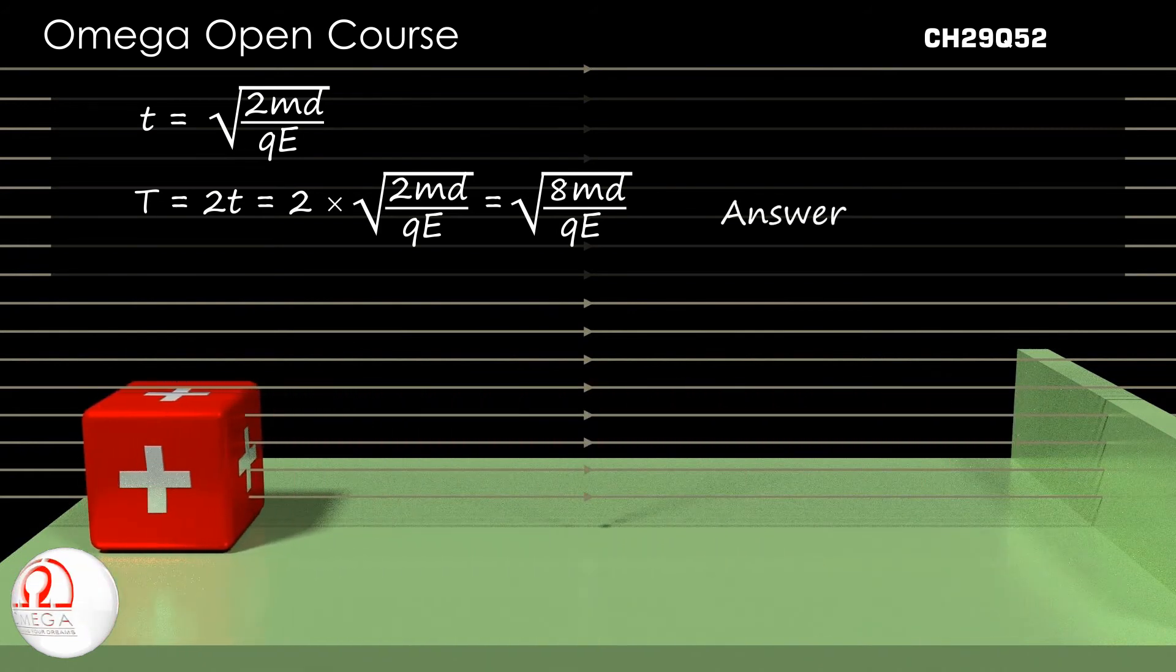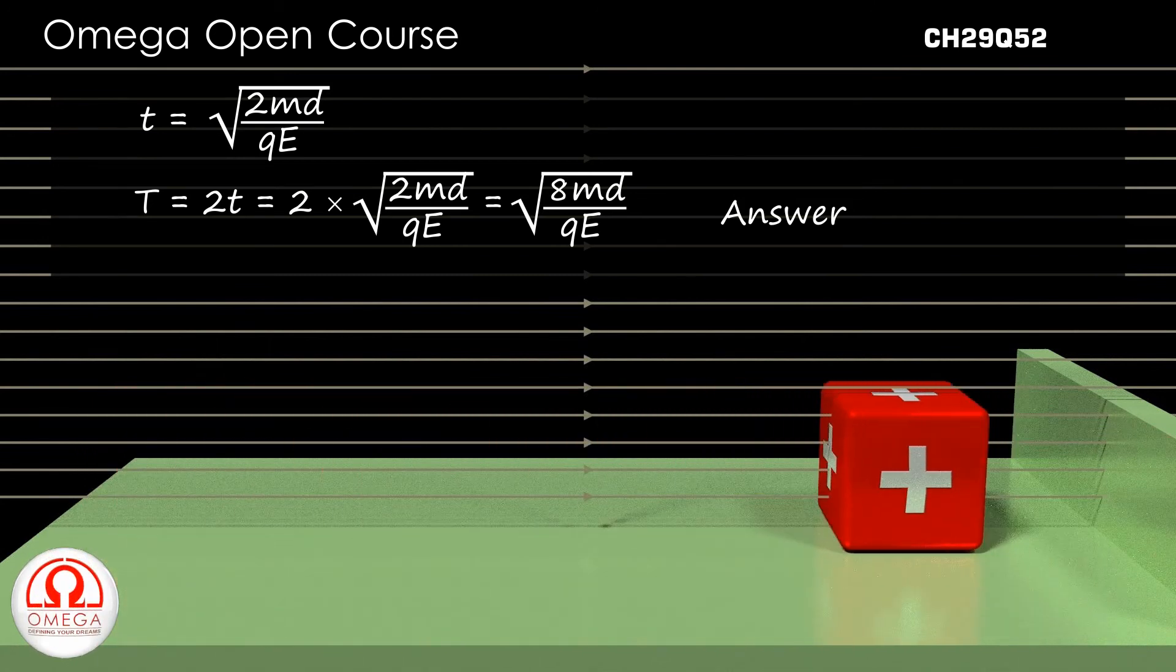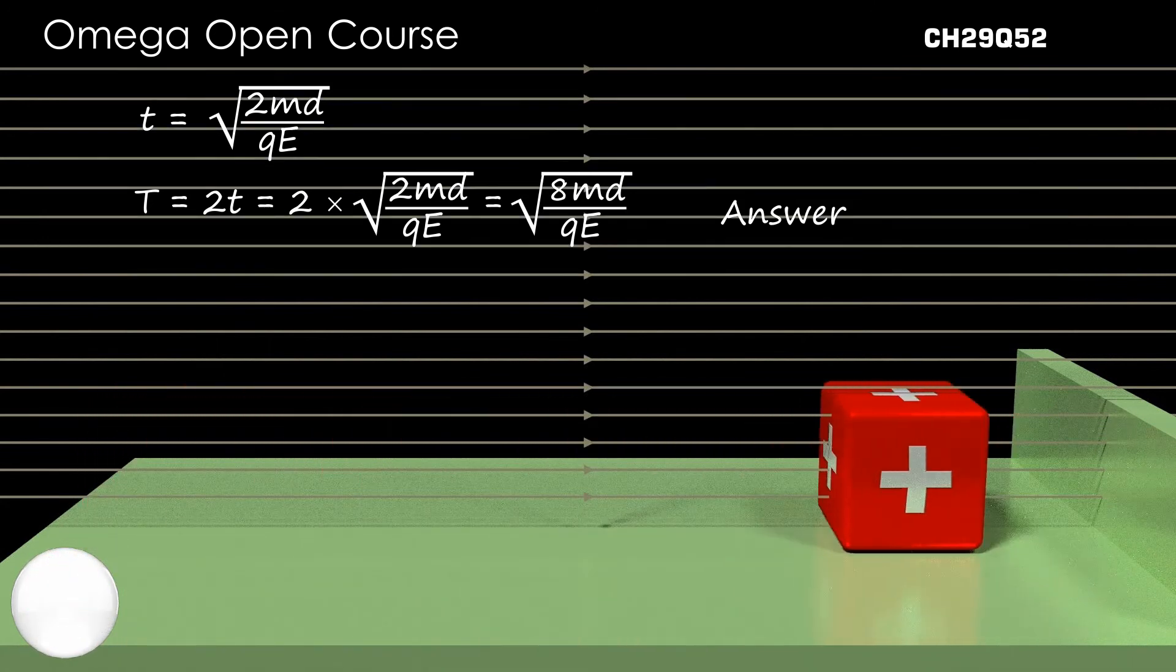It is not a simple harmonic motion because in a simple harmonic motion, the acceleration is proportional to the displacement. But in this case, as we can see, acceleration is constant.